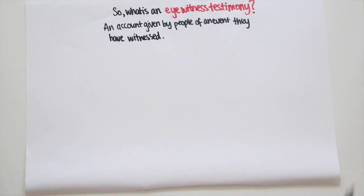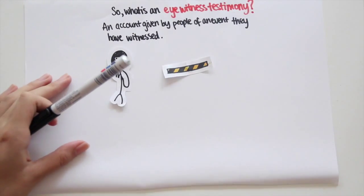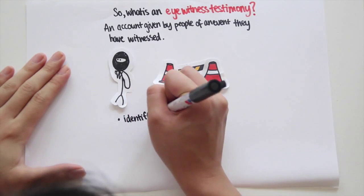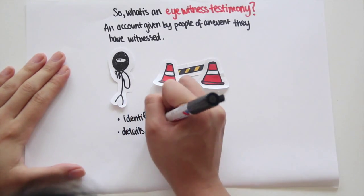For example, they may be required to give a description at a trial of a robbery or a road accident someone has seen. This includes identification of perpetrators, details of the crime, and etc.